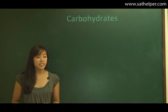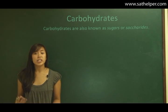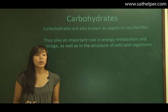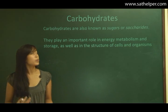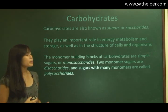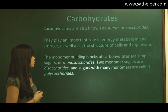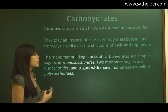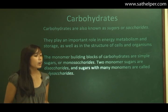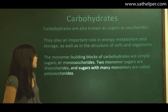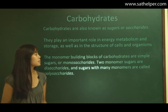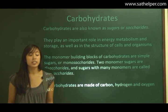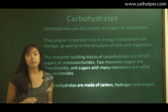Let's get started with carbohydrates. Carbohydrates are known as sugars or saccharides. They play an important role in energy metabolism and storage, as well as in the structure of cells and organisms. The monomer building blocks of carbohydrates are simple sugars, or monosaccharides. Two monomer sugars are disaccharides, and sugars with many monomers are called polysaccharides. All carbohydrates are made out of carbon, hydrogen, and oxygen — three out of the four most common elements in living things.